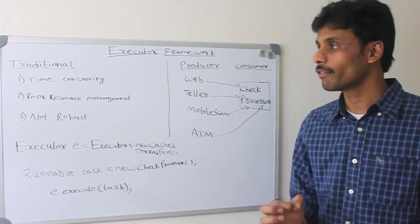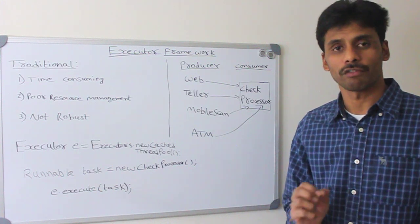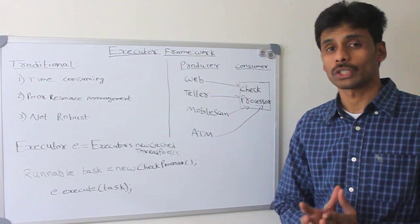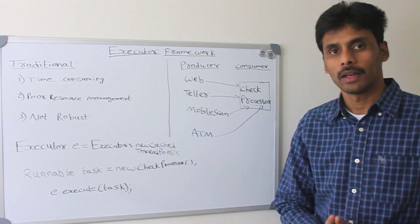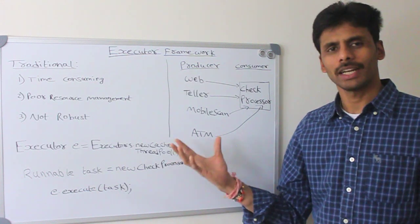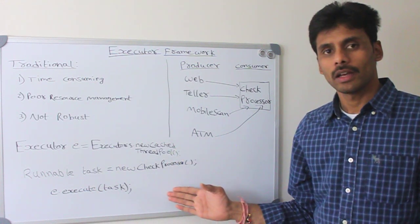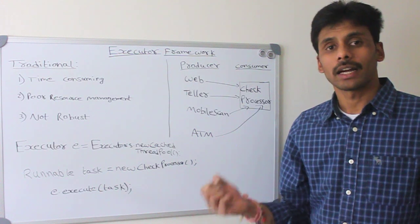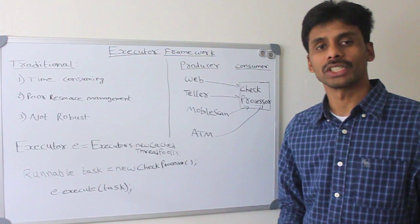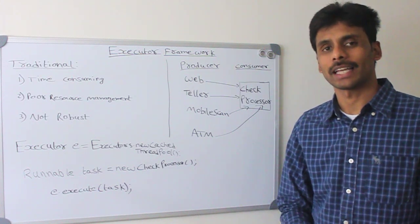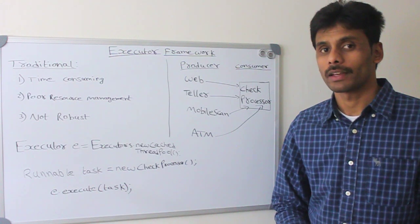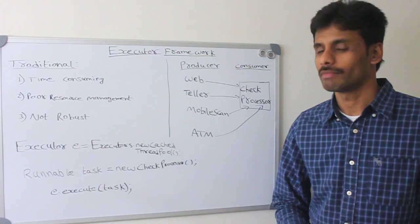So the executor framework that was introduced in Java version 5 overcomes these limitations very easily by giving us what is called thread pool. So it allows us to create a pool of worker threads. But once these threads are done with their job, they will go back to a pool instead of dying out and the JVM creating these threads again and again. If you are aware of the database connection pooling concept in the Java EE development world, it's very similar.